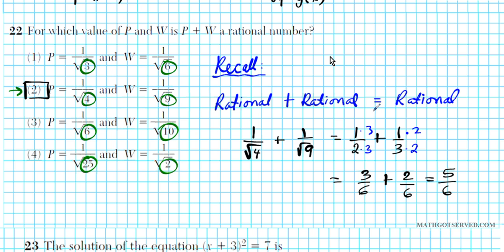For problem number 22, you have to remember that in order to get a rational result, you have to add rational numbers — rational plus rational equals rational. Look for options where the addends are actually rational. A radical is rational if the radicand is a perfect square, like four and nine. Option two is rational because those two numbers can be simplified into one half and one third, and since they're both rational, their sum must be rational also.